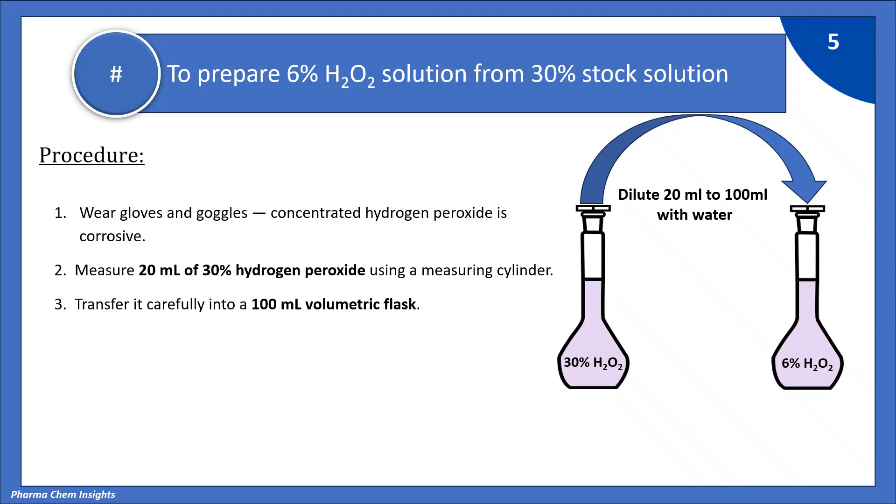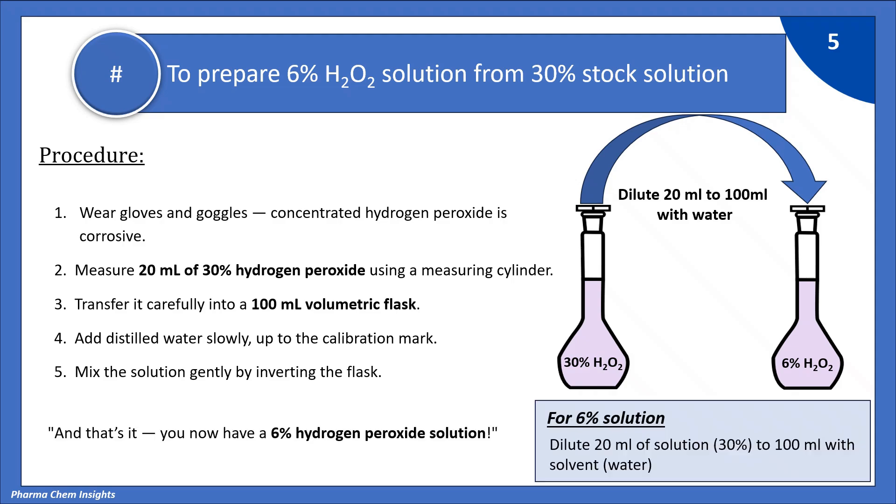Add distilled water slowly up to the calibration mark. Mix the solution gently by inverting the flask. And that's it. Now, you have a 6% hydrogen peroxide solution.